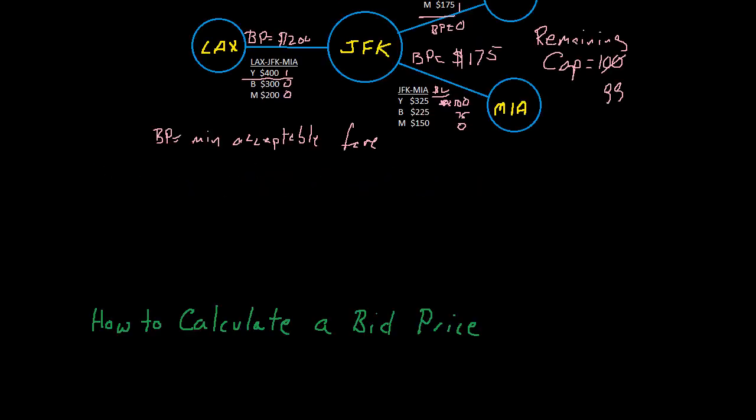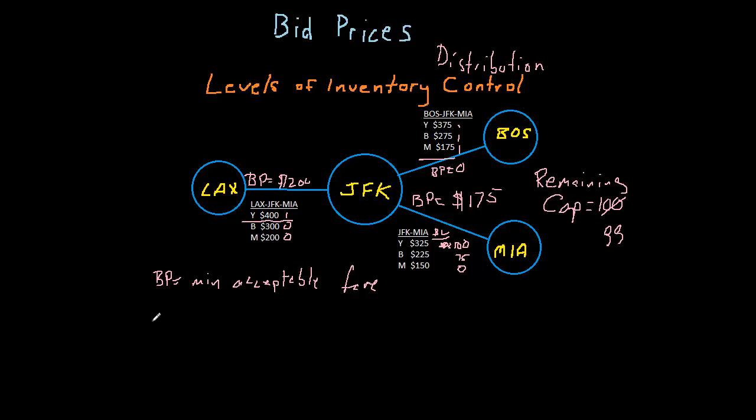Let's take a quick look back at our previous video example as a refresher. We had this network here, and for the JFK-Miami leg, we said there was a bid price of $175.